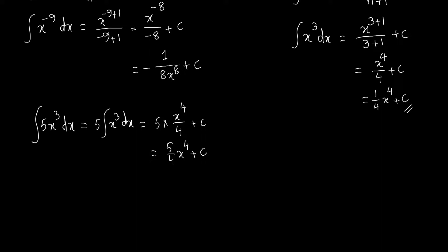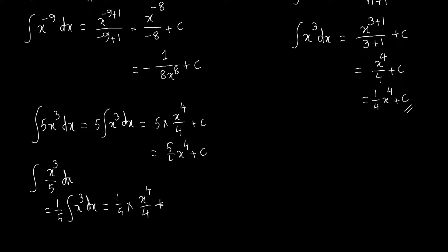If the expression is x to the power 3 divided by 5, we treat 1/5 as a constant and isolate it: one-fifth times the integral of x³ dx. Integrating x³ gives x to the power 4 divided by 4, so the result is 1/5 times x⁴/4 plus C, which simplifies to 1 over 20 times x to the power 4 plus C.